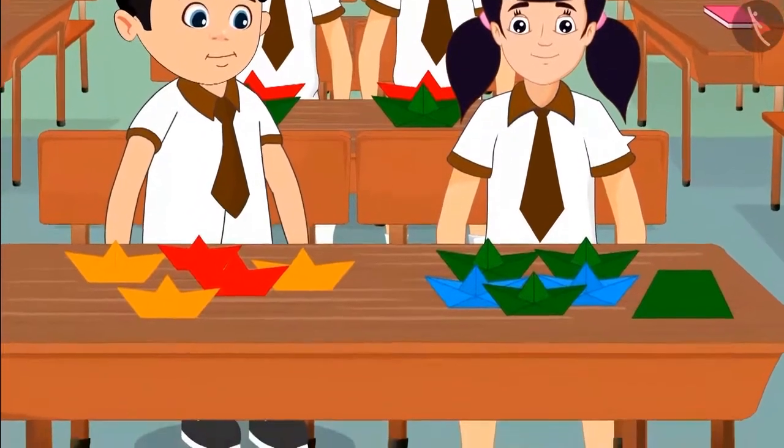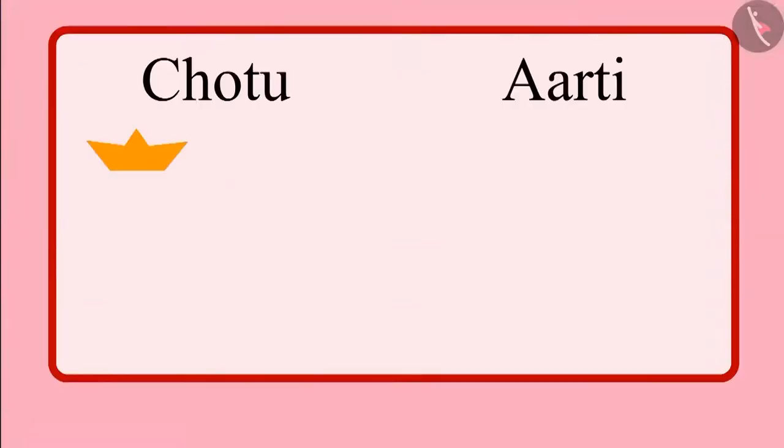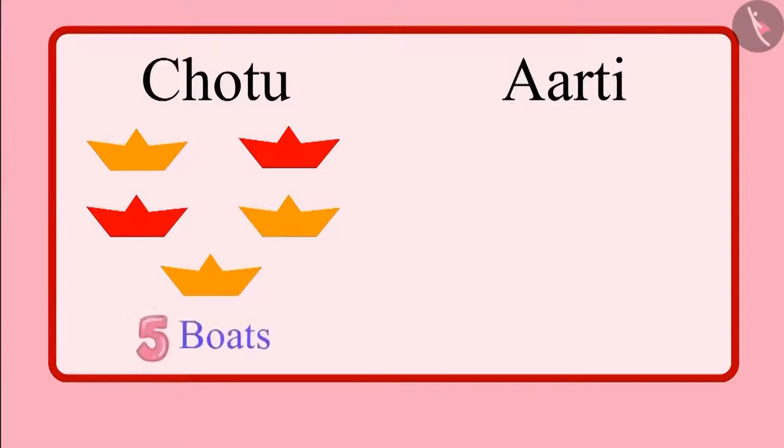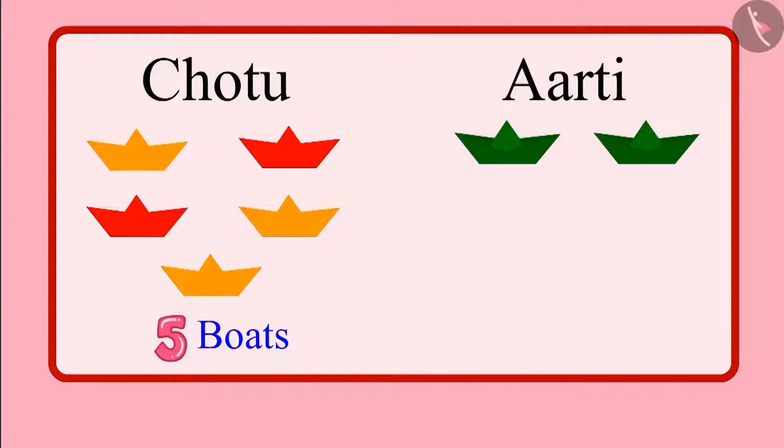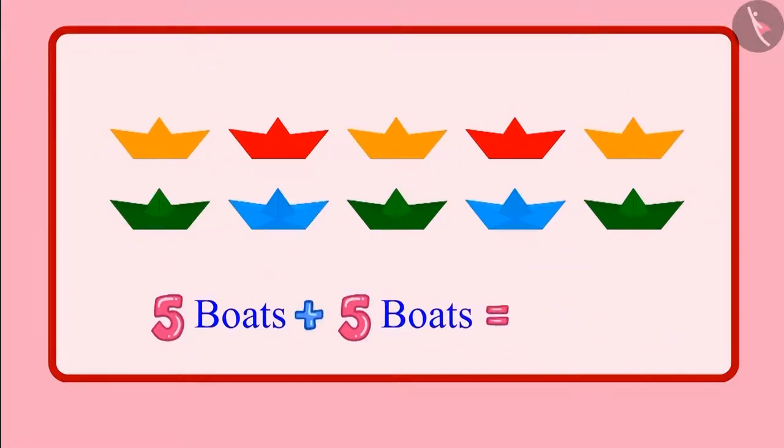Come on children, let us see how many boats have Chotu and Aarti made in total. 1, 2, 3, 4, 5. So Chotu made 5 boats. And Aarti made 1, 2, 3, 4, 5. That means 5 boats. So children, can you tell me how many boats did Chotu and Aarti make together? Yes, Chotu and Aarti have together made 10 boats.